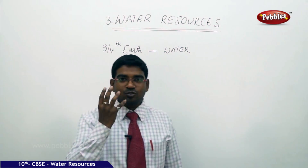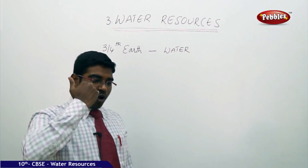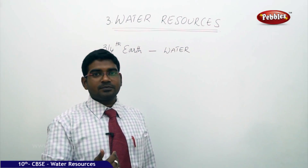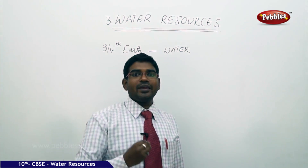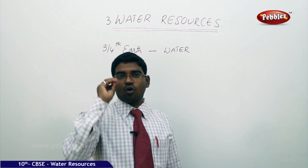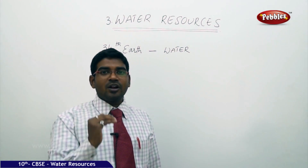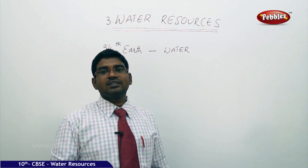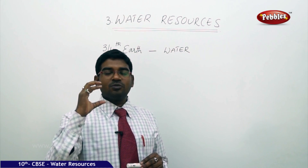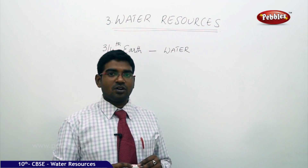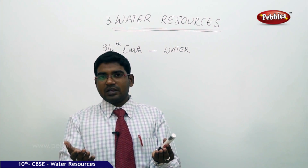But still, we hear news about scarcity of water, non-availability of water in some parts, and people walking miles and miles to get water to fulfill their daily needs. So why, though earth is filled with three-fourths of its parts with water, do we still have scarcity of water today? Why are people not able to access drinking water? There is a big gap between the availability of water and the reachable usage of water by people.